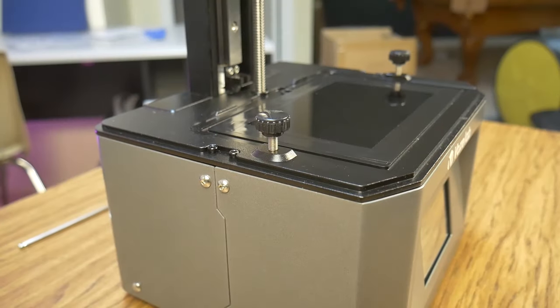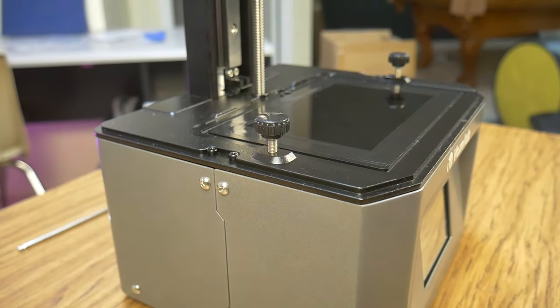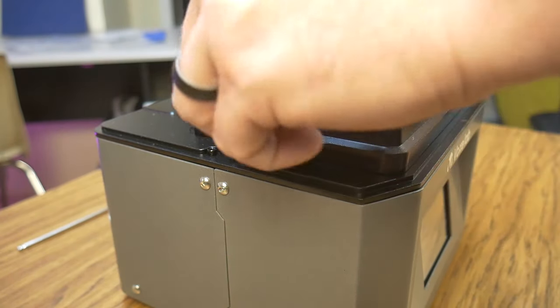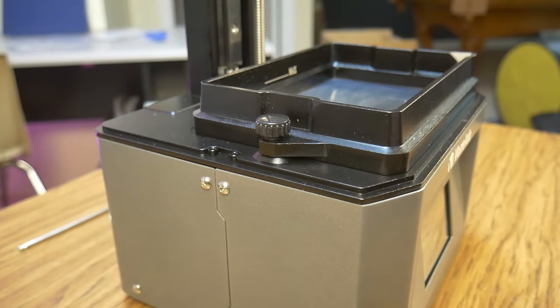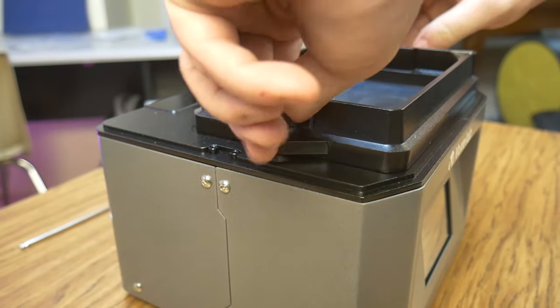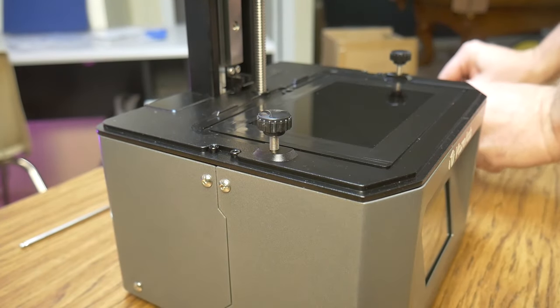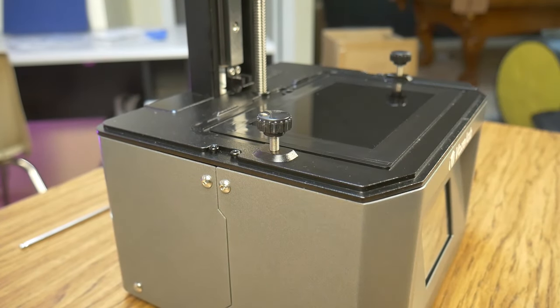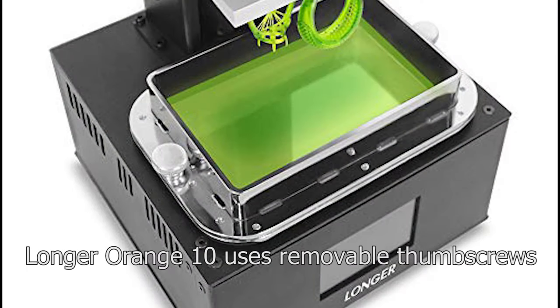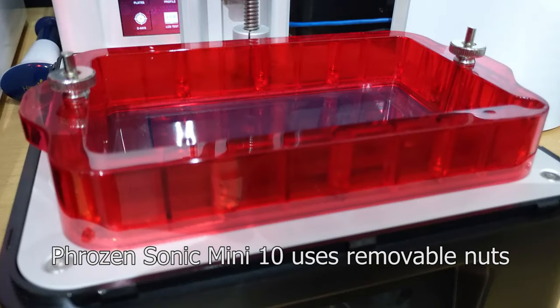I really like how the resin vat is held down with screws. What I mean by that is that it uses two screws to hold the vat down, and you don't have to remove those screws all the way in order to slide the vat out when you need to change your resin. A lot of other printers either require you to remove the screws completely, or they have wing nuts or some other type of nuts that you have to take off of two studs, and those loose nuts and loose screws could easily fall into the resin or get lost or make some other type of mess.